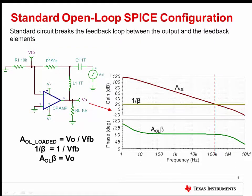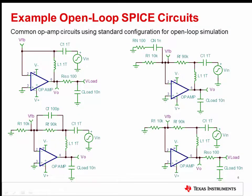Loaded AOL equals VO divided by VFB. 1 over beta equals 1 over VFB. Loop gain equals VO. Several common circuits ready for open loop simulation are provided here. These circuits can be used to review where to break the loop in many common circuit configurations. For proper stability analysis, any output loads must remain directly on the output of the op-amp and should not be placed on the other side of the inductor, as doing so would remove the effects that the output load has on the op-amp output.